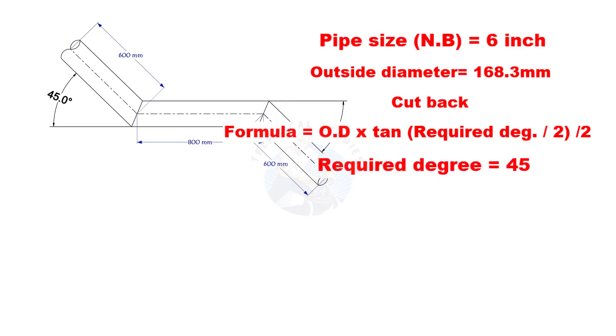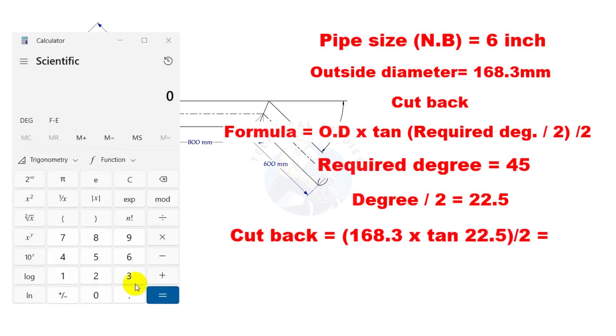Here, the required degree is 45. Half of 45 is 22.5. The cutback is nearly 35 millimeters.